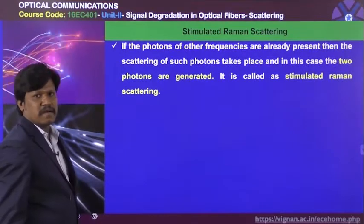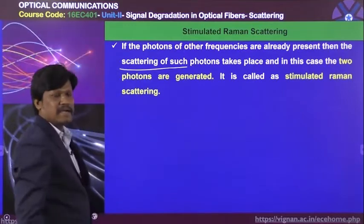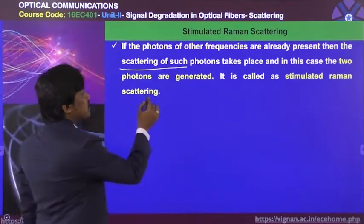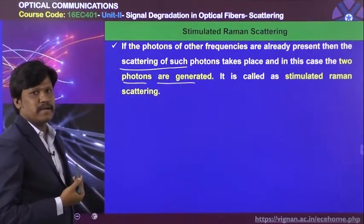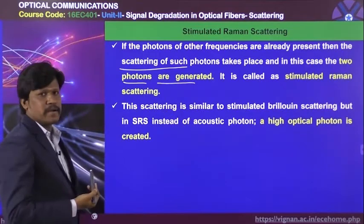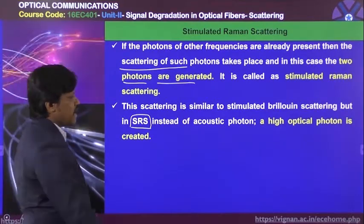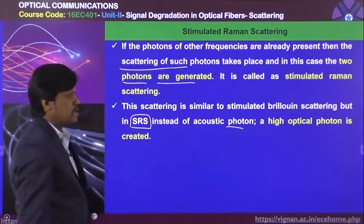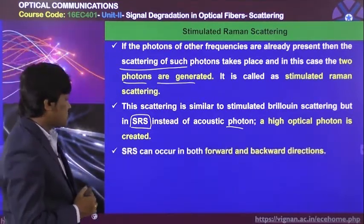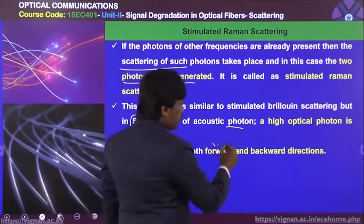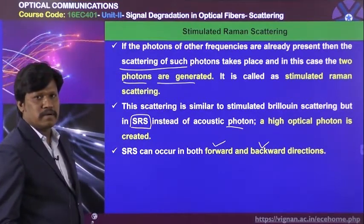If photons of other frequencies are already present, then the scattering of such photons takes place and two photons are generated. This is called stimulated Raman scattering. It is similar to stimulated Brillouin scattering, except that in Raman scattering, instead of an acoustic photon, a high-energy optical photon is created. SRS can occur in both forward and backward directions.